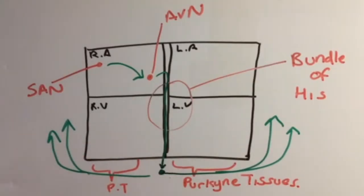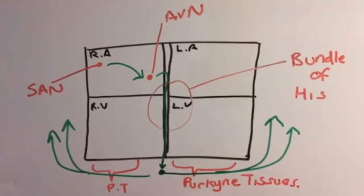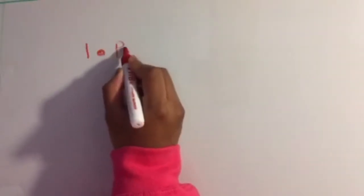The Bundle of His runs along the middle and goes all the way down to the apex, which is at the bottom of the heart. The bundle then splits, and the electrical activity travels down to the bottom of the apex and back up through the Purkinje tissue.